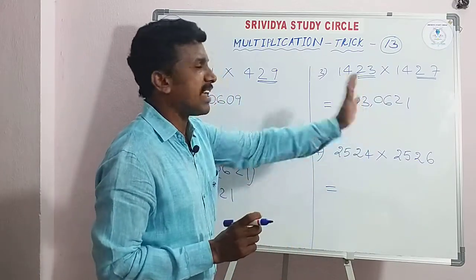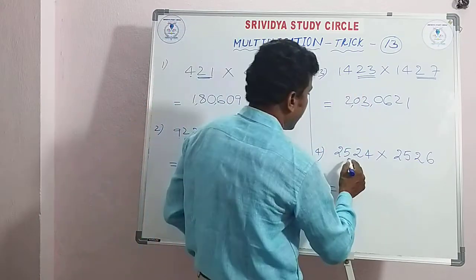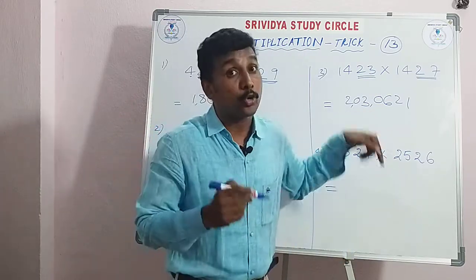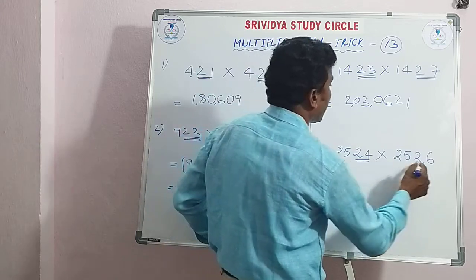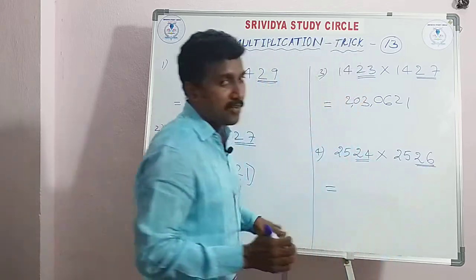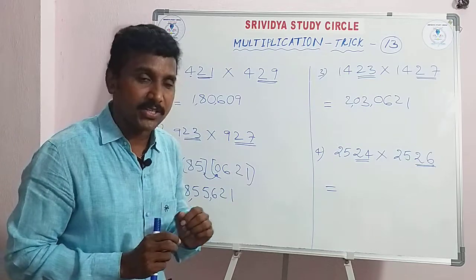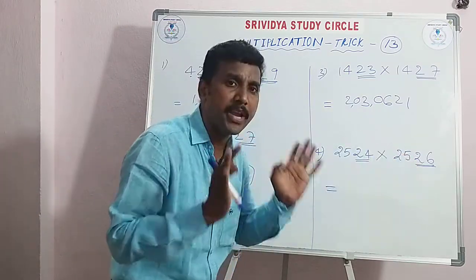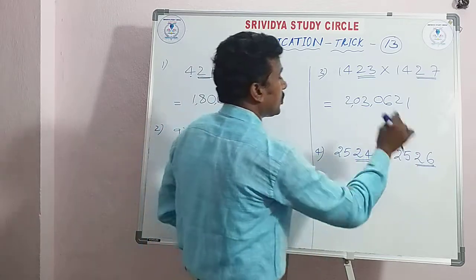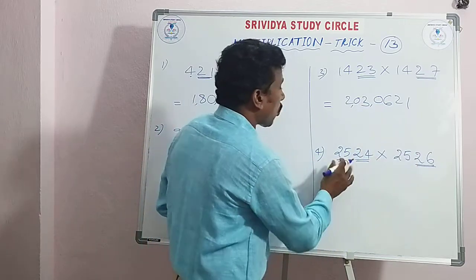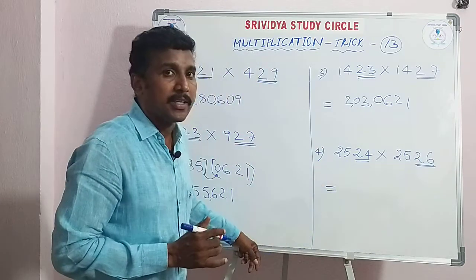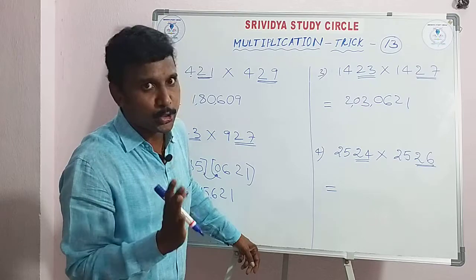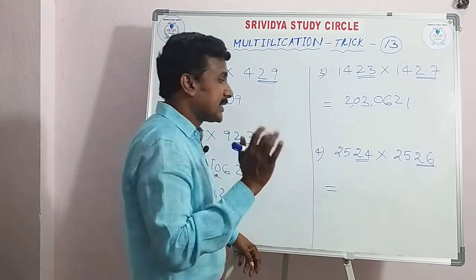Now 2524 into 2526. First check: last two digits 24 plus 26 equals 50 — condition satisfied. Now 25 squared equals 625. Twenty-five squared — remember this. 625, and 25 divided by 2 is 12.5.